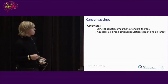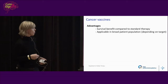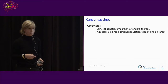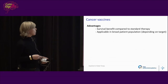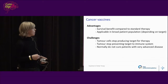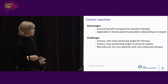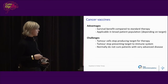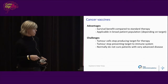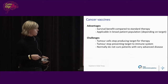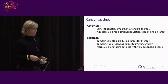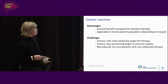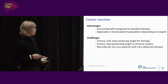The advantages of cancer vaccines are that there is a survival benefit in responding patients, and it is possible to use them in a broad patient population depending on what is targeted, or they can be personalized. However, challenges exist: tumor cells can stop producing the target, or they can change and stop presenting the target to the immune system. It's also very hard to cure patients with very advanced disease, as the immune system may be compromised and the therapy takes a few months to work.